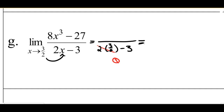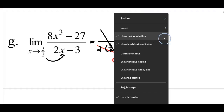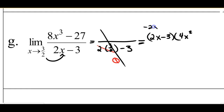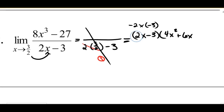Factoring 8X³ minus 27: that would be the cube root of 8X³, or 2X, minus the cube root of 27, which is 3, times the first squared, minus the first times the second — so minus 2X times negative 3 is positive 6X — and then the last squared: negative 3 squared is positive 9. So that's my numerator.